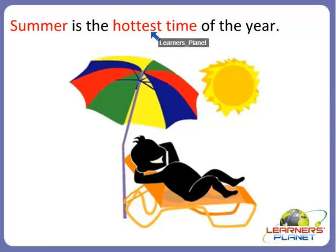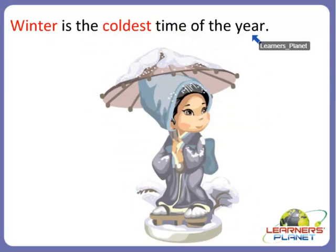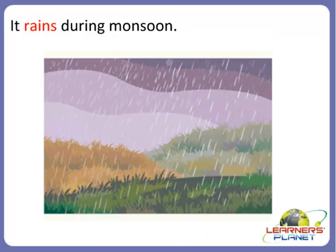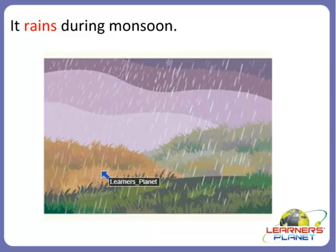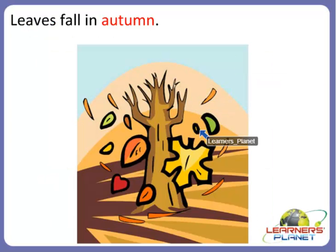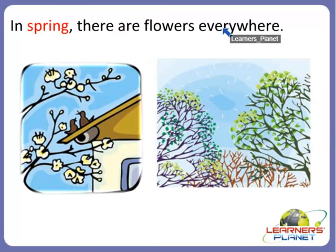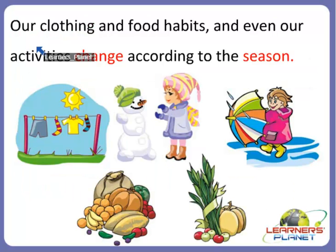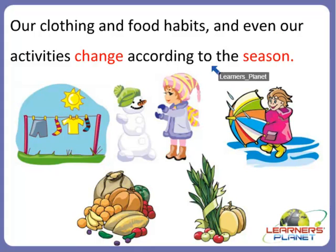Summer is the hottest time of the year. Winter is the coldest time of the year. It rains during monsoons. Leaves fall in autumn season. In spring season there are beautiful flowers everywhere. Based on changing seasons, our clothing, food habits and even our activities also change according to the season.